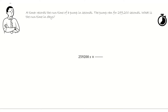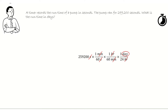259,200 seconds multiplied by 1 minute over 60 seconds, multiplied by 1 hour over 60 minutes, multiplied by 1 day over 24 hours. The seconds will cancel, the minutes will cancel, the hours will cancel, leaving us with days.